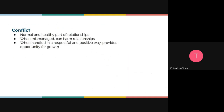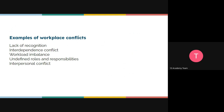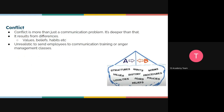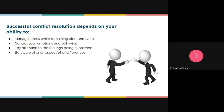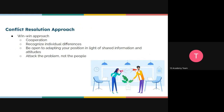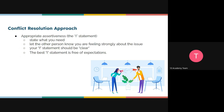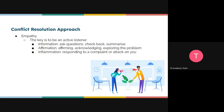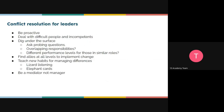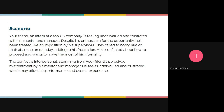Quick recap before the scenario: we talked about examples of workplace conflicts — lack of recognition, interdependence, interpersonal conflicts, and others. Conflict is normal but must be addressed well. We covered different approaches: win-win situation, appropriate assertiveness, cooperative power, empathy, and conflict resolution for leaders. Now let's look at a scenario and discuss it together.